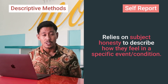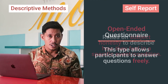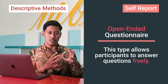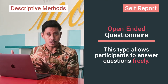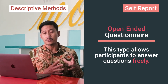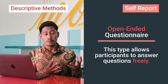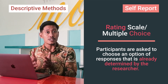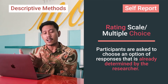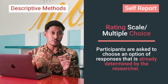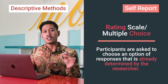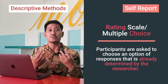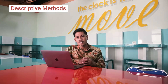There are two kinds of self-report you can use. The first one is the open-ended questionnaire, where the researcher asks questions and it is up to the subject to answer freely. The second type is using a rating scale or multiple choice, where the experimenter has already determined the response options and the subject simply chooses the option that best represents them.